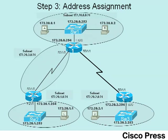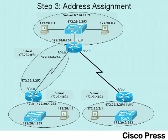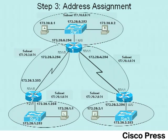For the left-hand WAN serial link subnet, 172.20.3.0, there are two routers so we use the two largest IP addresses: router 1 gets 172.20.3.254 and router 2 gets 172.20.3.253. For the far right serial link, subnet 172.20.4.0, router 1 gets 172.20.4.254 and router 3 gets 172.20.4.253.